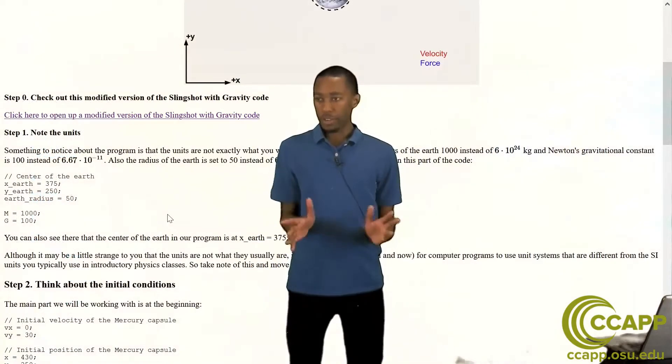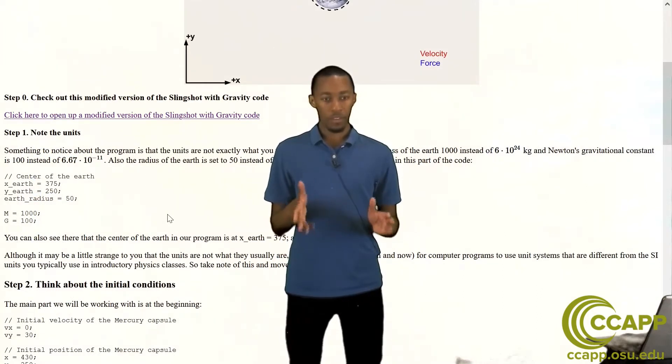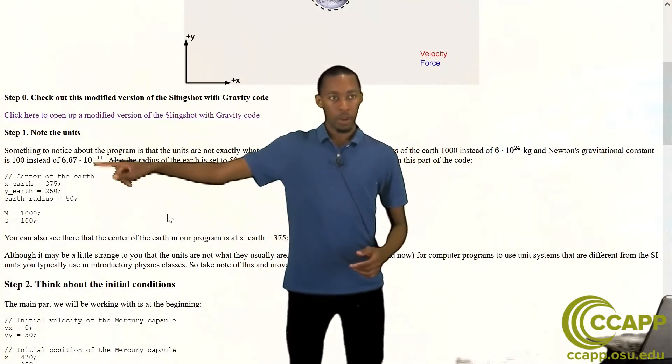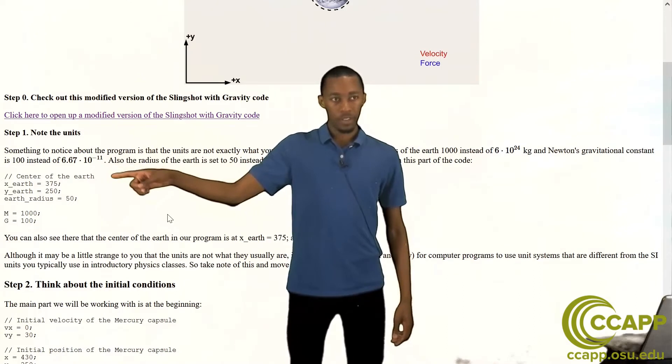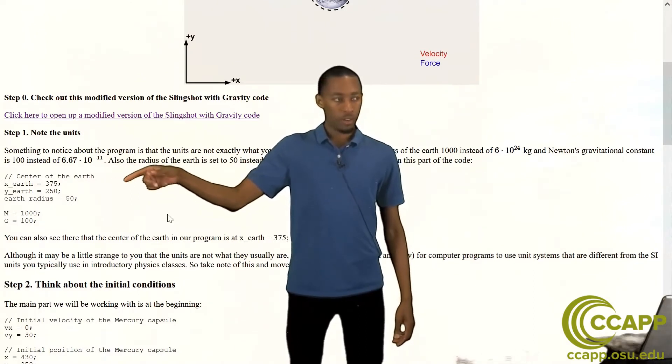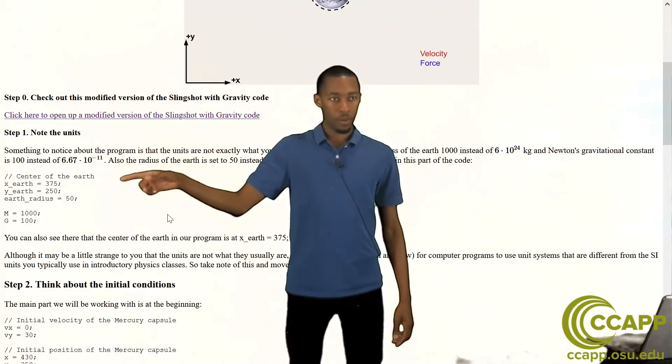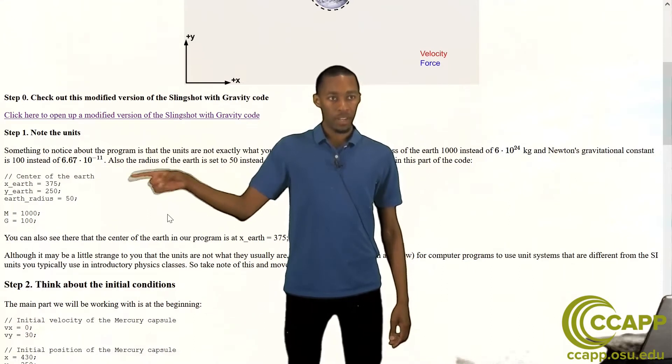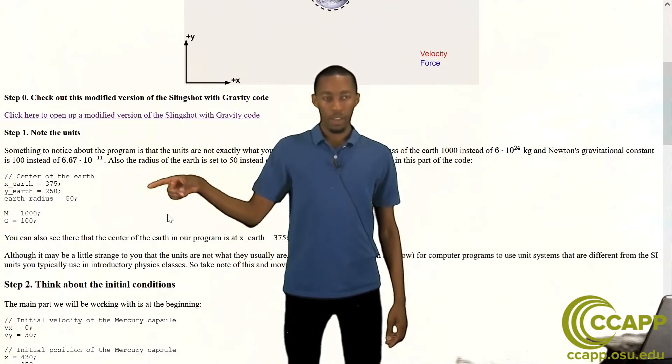So that's step one. The first thing we like to do is take note of the units we're dealing with here because in any physics problem it's very important to understand what units you're dealing with in order to get reasonable results. Now what you'll notice around here is that we give coordinates to the position of the earth.